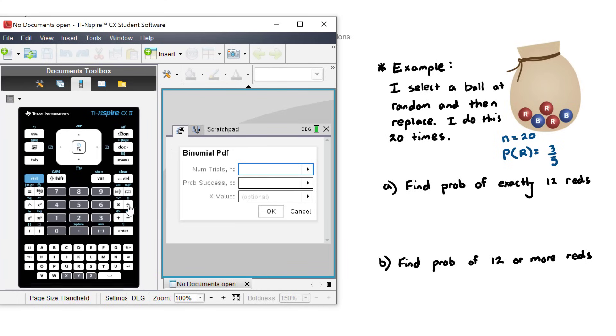Now the number of trials, there are 20 bag selections. So I'm going to choose 20. Probability of success is three on five, you can enter that as a division. And the x value as well, how many reds are we interested in finding out, or how many successful trials? And that is 12. We hit okay.